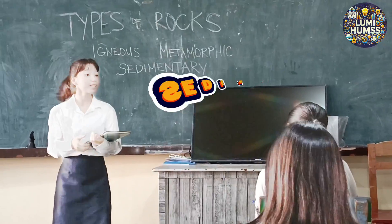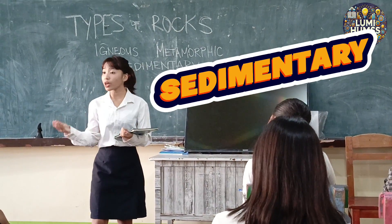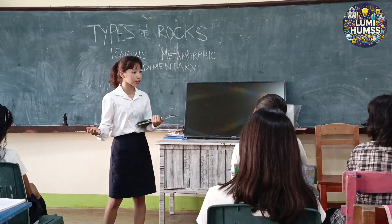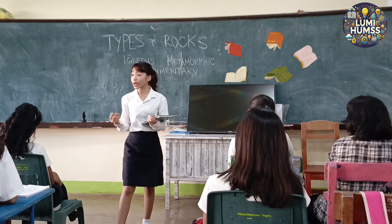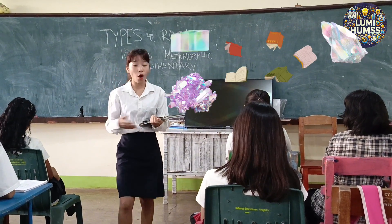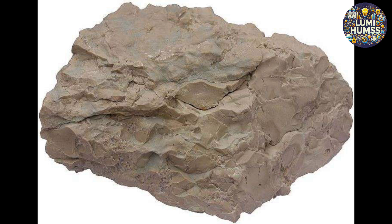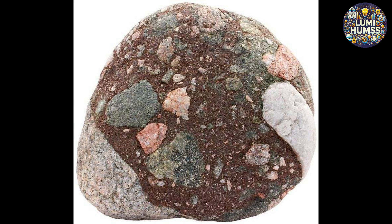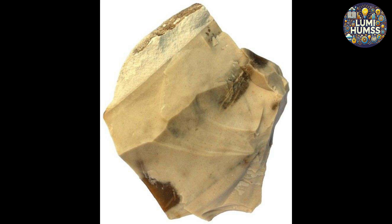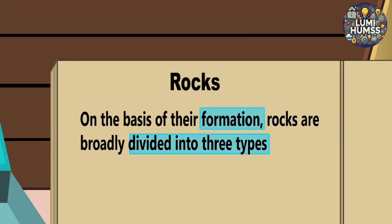And last is sedimentary. Sedimentary is formed through accumulation and compaction of minerals or organic materials. You can find dolomite, tuff, chert, oil shale, and diatomite.